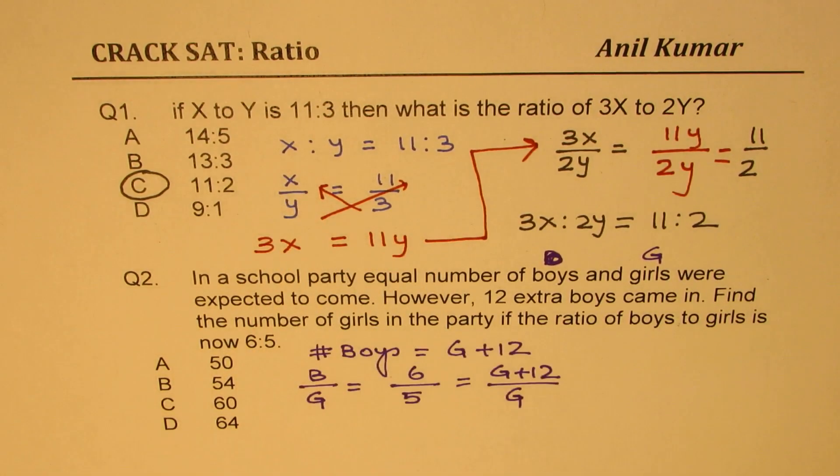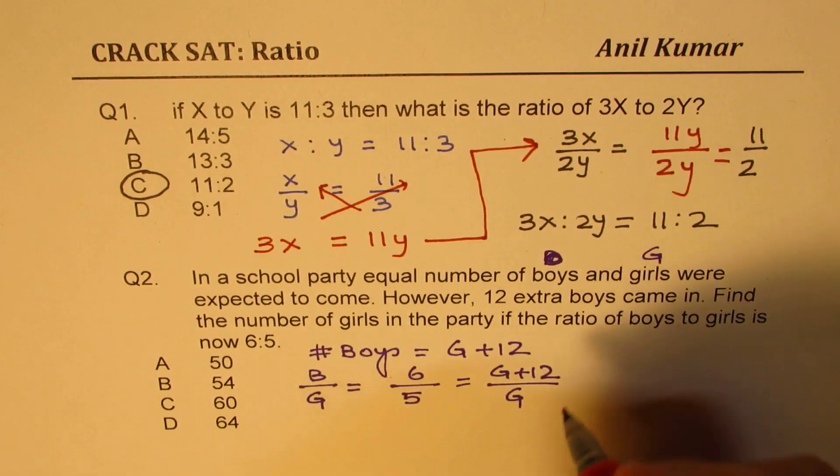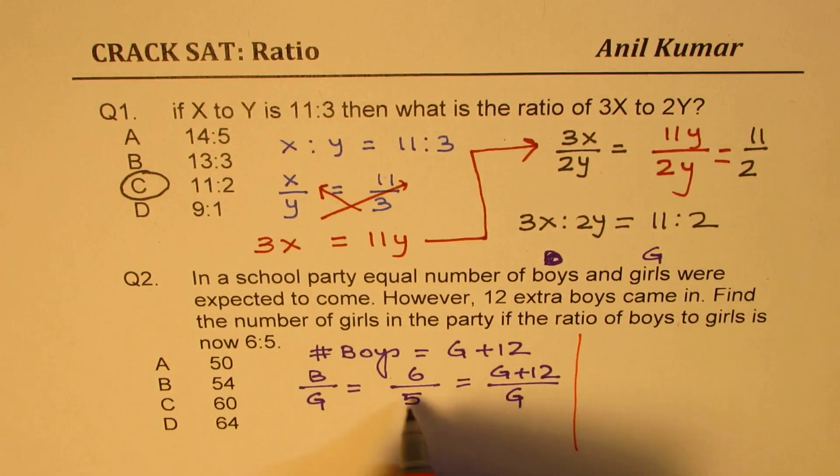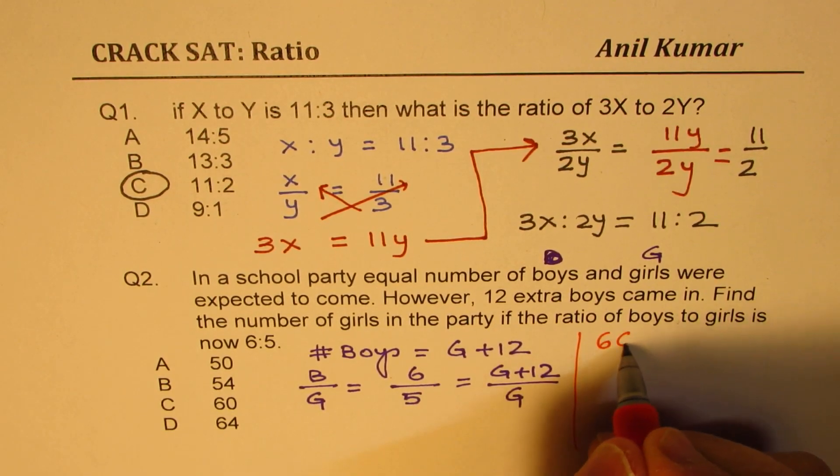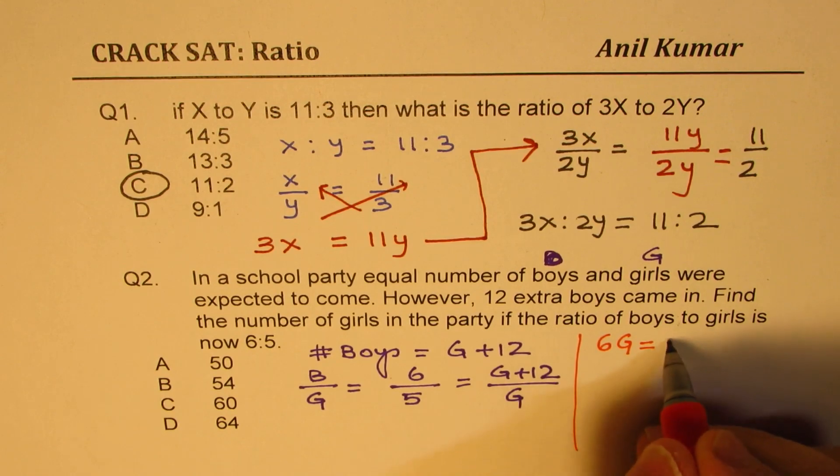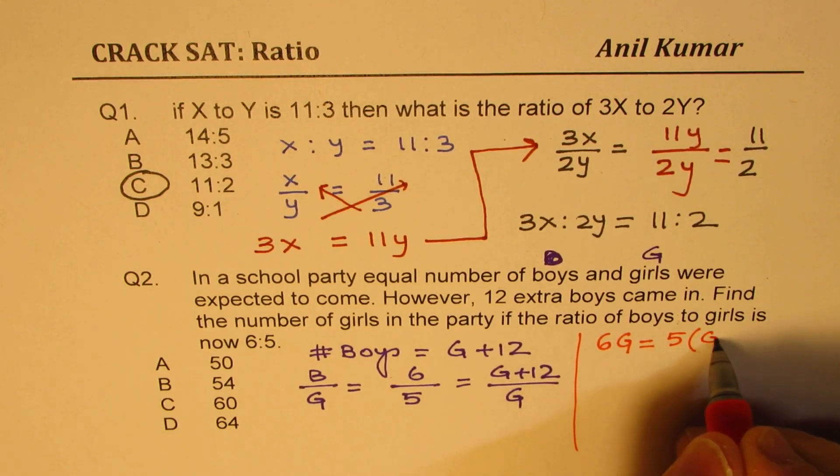Now again, we'll cross multiply. So solving any ratios question, the strategy is to cross multiply and then figure out the answer. So if you cross multiply, what do you get? Let's do it on the right side. So we get 6G equals to 5 times G plus 12.